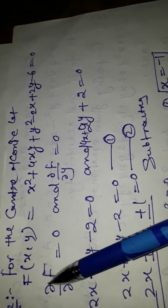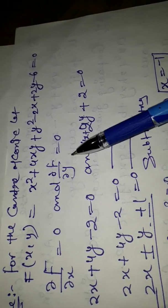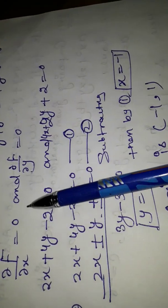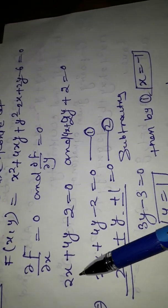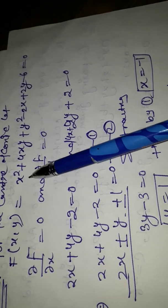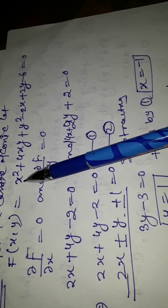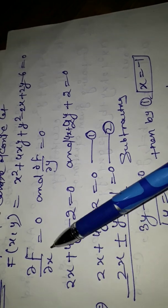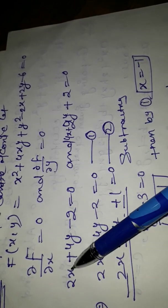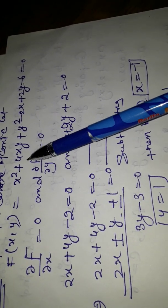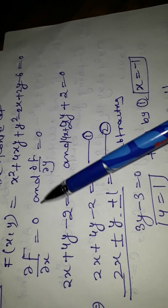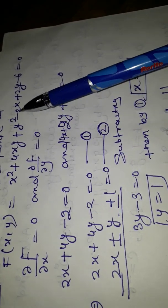Therefore, we get ∂f/∂x = 0 and ∂f/∂y = 0, giving us two equations. Differentiating x² with respect to x gives 2x, and differentiating 4xy with respect to x gives 4y.